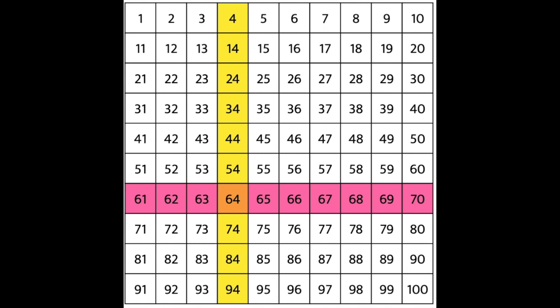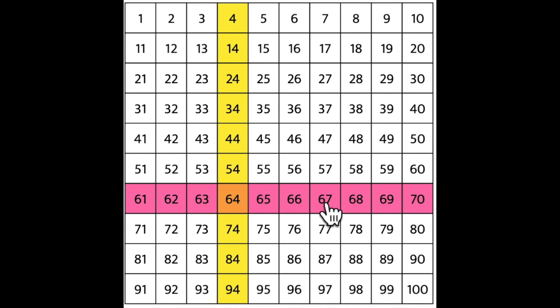If you wanted to practice counting up one at a time, you would need to count using the row, like this: 61, 62, 63, 64, 65, 66, 67, 68, 69, 70.